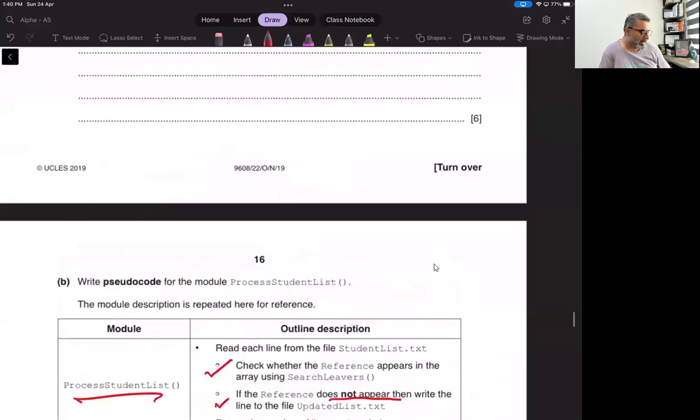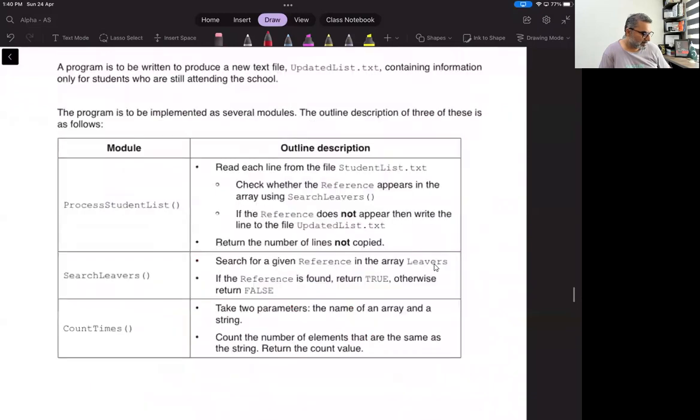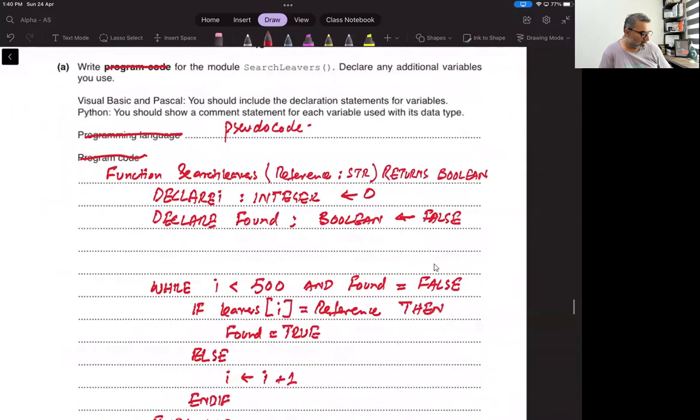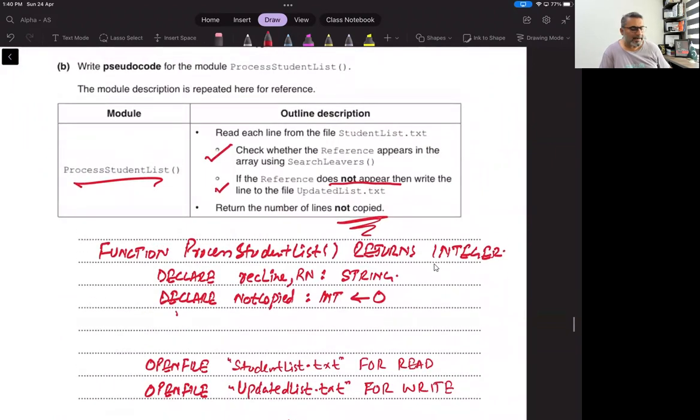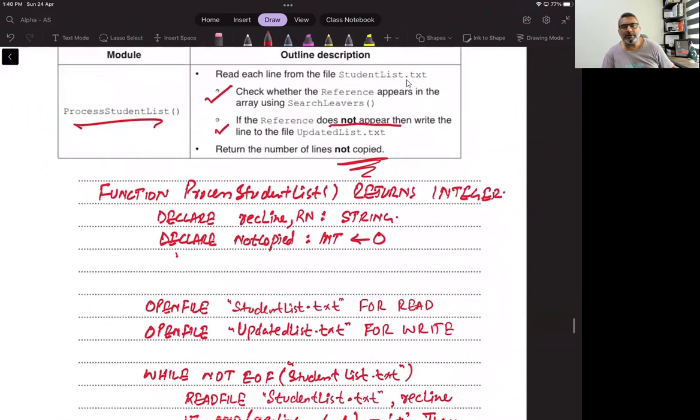So, question 6, part b, write pseudocode for the module process student list. The module description is repeated here for reference. Read each line from the file studentlist.txt. Open studentlist.txt for read. Check whether the reference appears in the array using search leavers. If the reference does not appear, then write the line to the file updated list. So we have to open updated list for write.